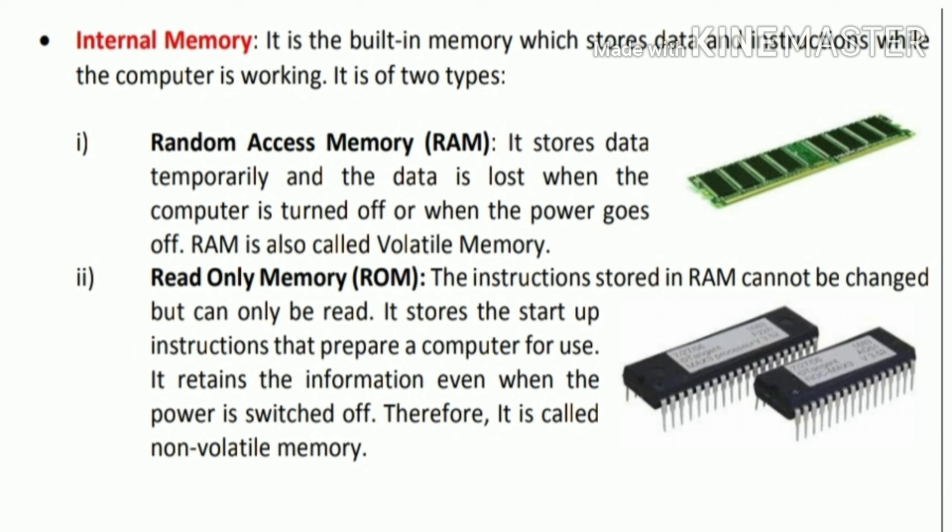So what is the main difference between RAM and ROM? RAM is volatile, which means it stores data only for a temporary period. ROM stores data permanently and it is non-volatile. So in internal memory, there are two main types: RAM and ROM.